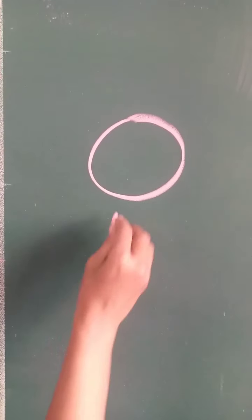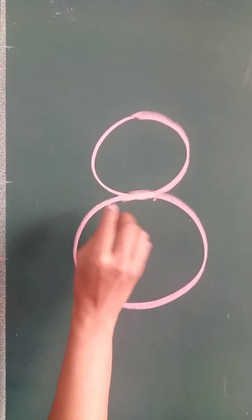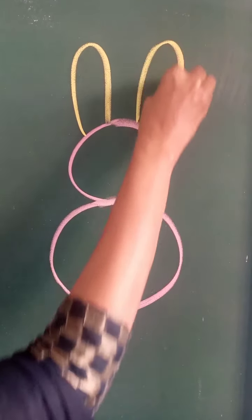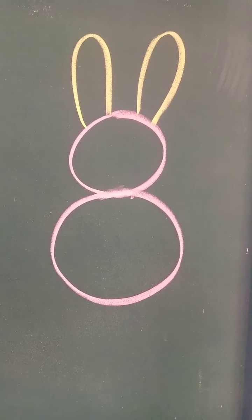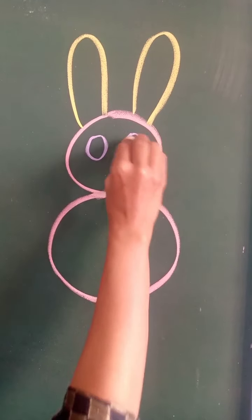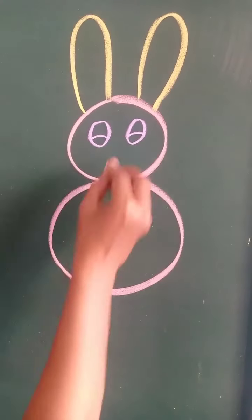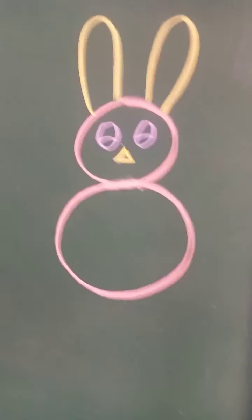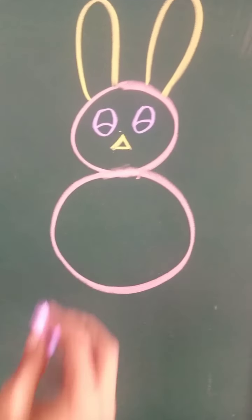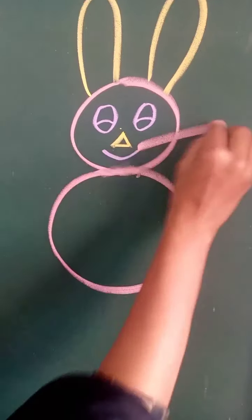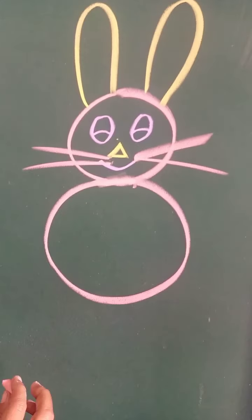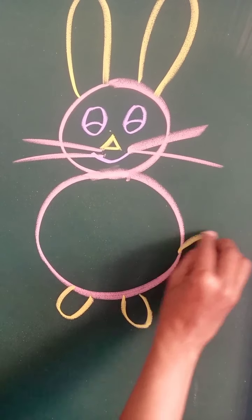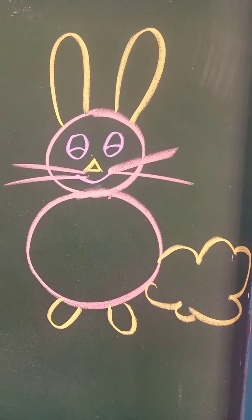Draw a circle. Small circle. Now from this point, we will draw a big circle. Now we will draw the ears of the rabbit. Rabbit have long ears. We will draw ears of the rabbit. Now we will draw the eyes of the rabbit. Draw the eyes of the rabbit. And we will draw the nose of the rabbit. And now we will make the lips and moustaches of the rabbit. Now we will make the feet of the rabbit. Make a curve like this. And now we will make the tail of the rabbit. This is R for rabbit.